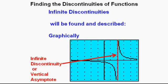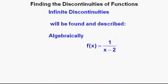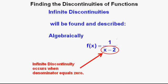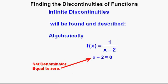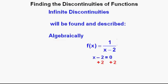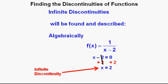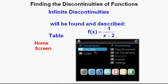Now we'll evaluate algebraically. The function is f(x) = 1 / (x − 2). The infinite discontinuity occurs where the denominator equals zero. Setting x − 2 = 0 and solving, we add 2 to both sides: x = 2. That's where our infinite discontinuity — or vertical asymptote — is located, which confirms what we already saw in the graph.